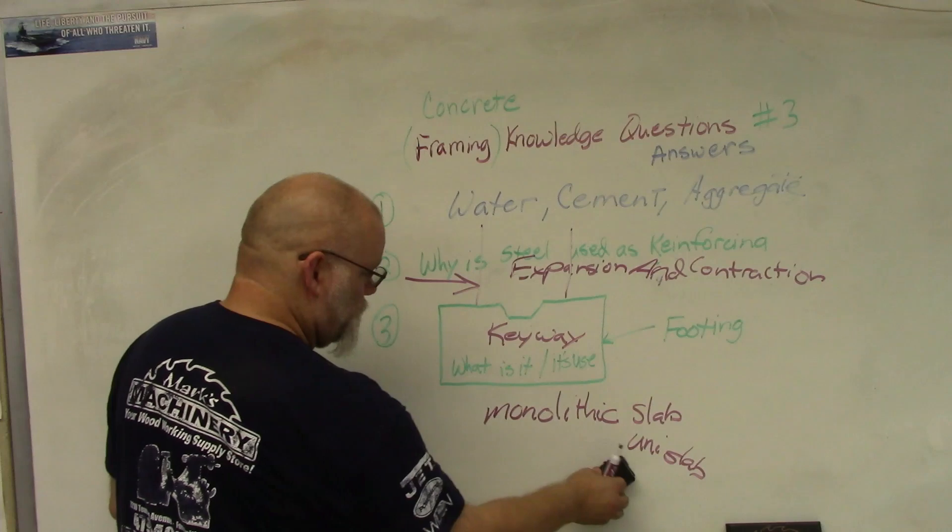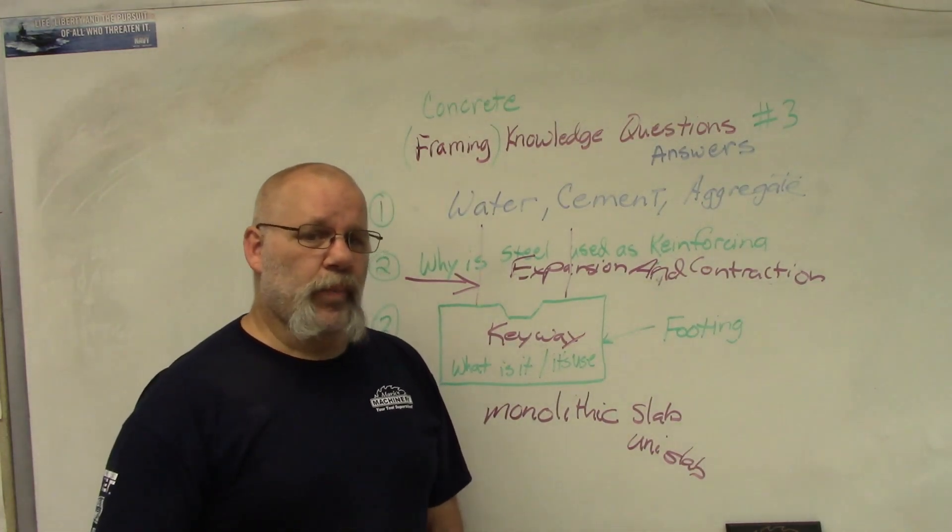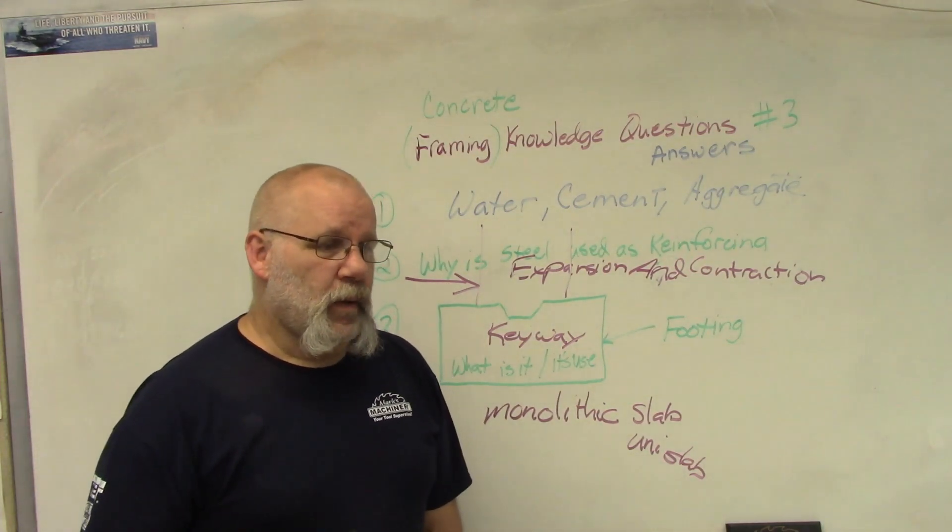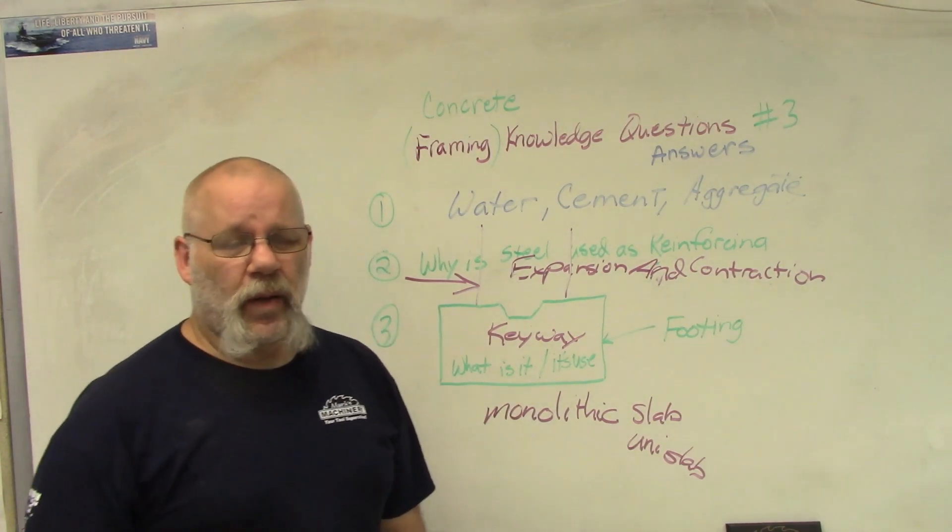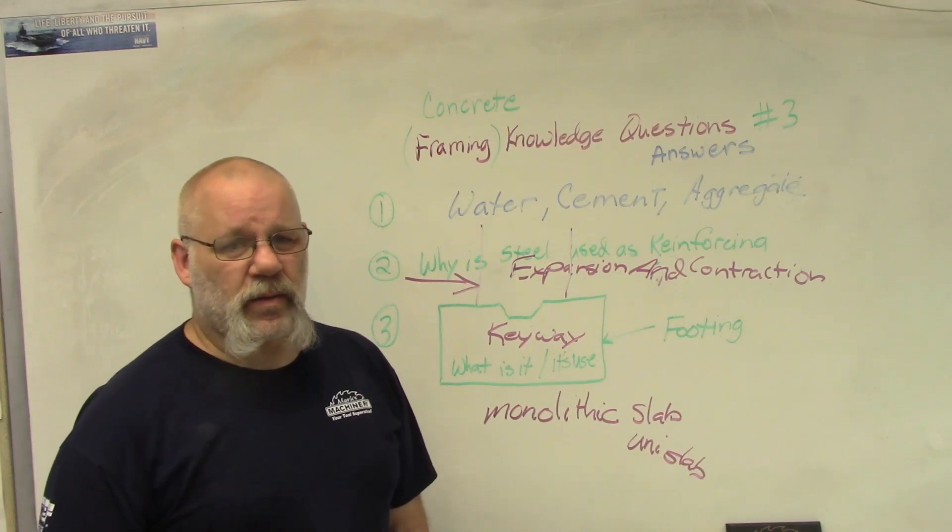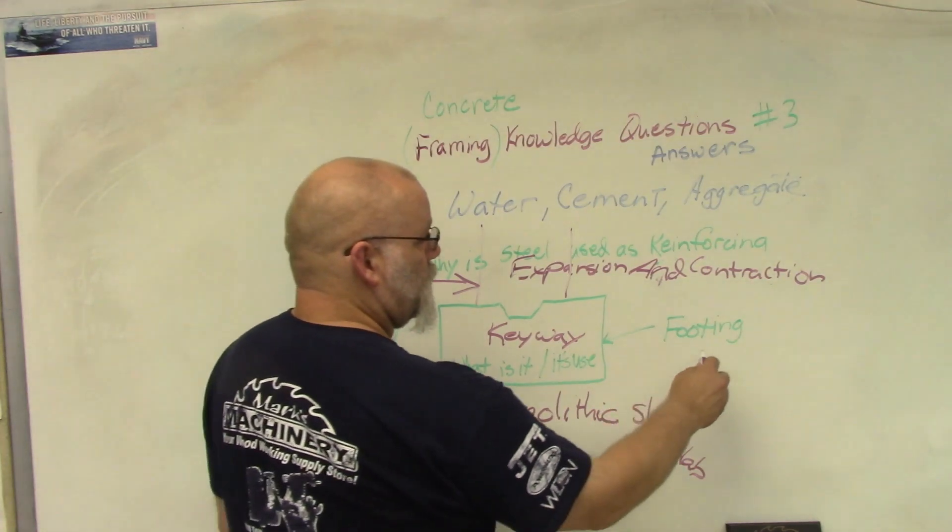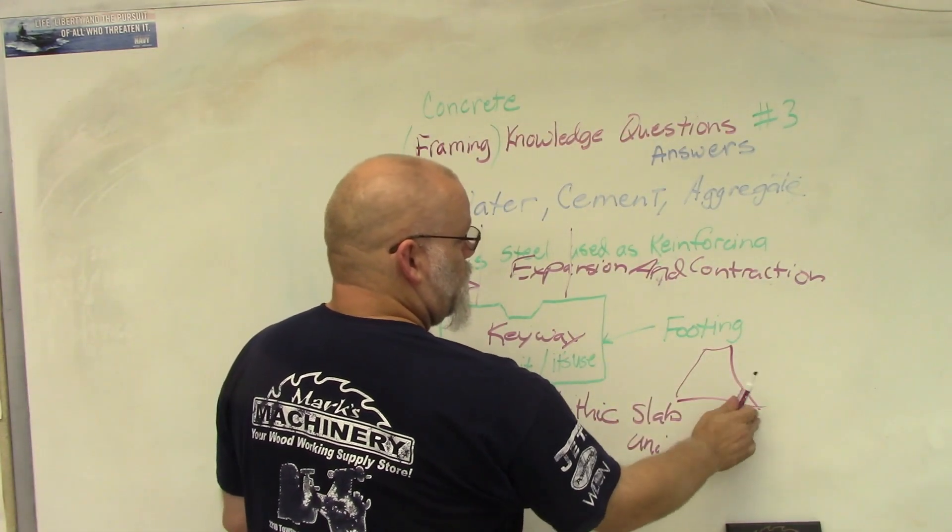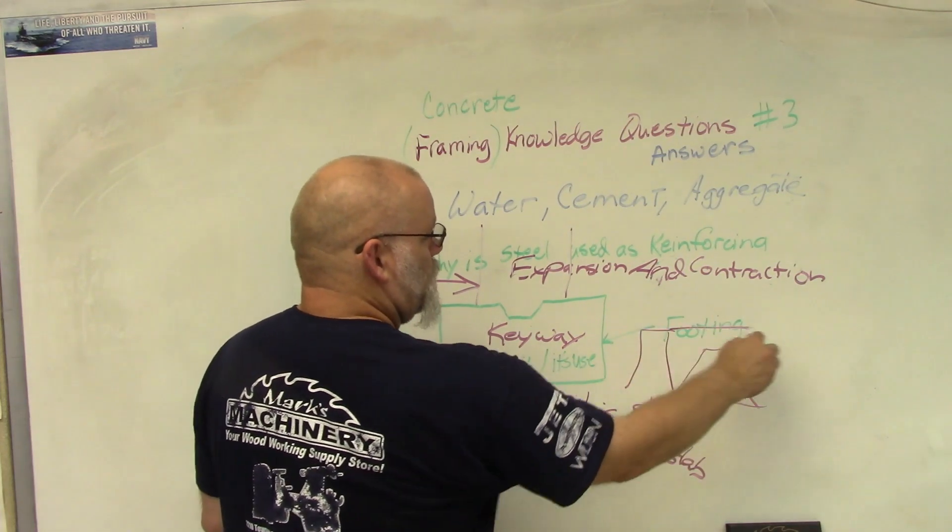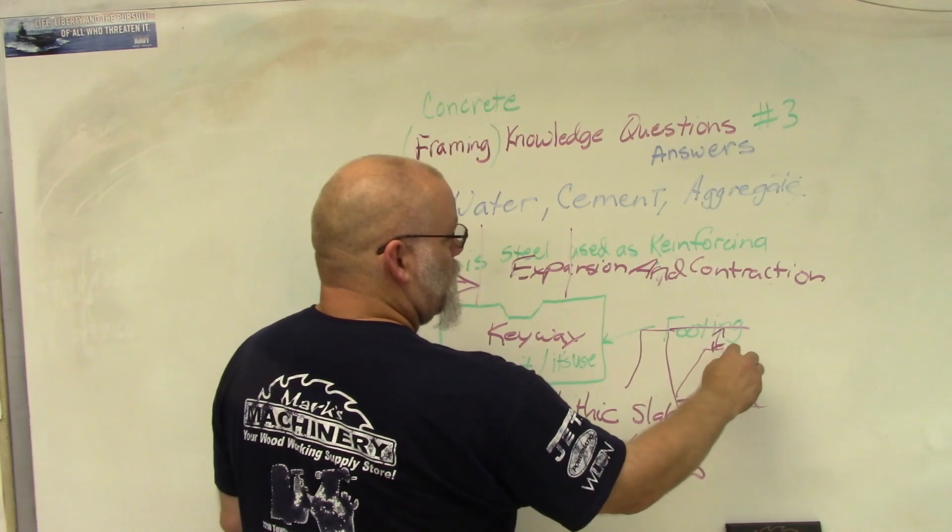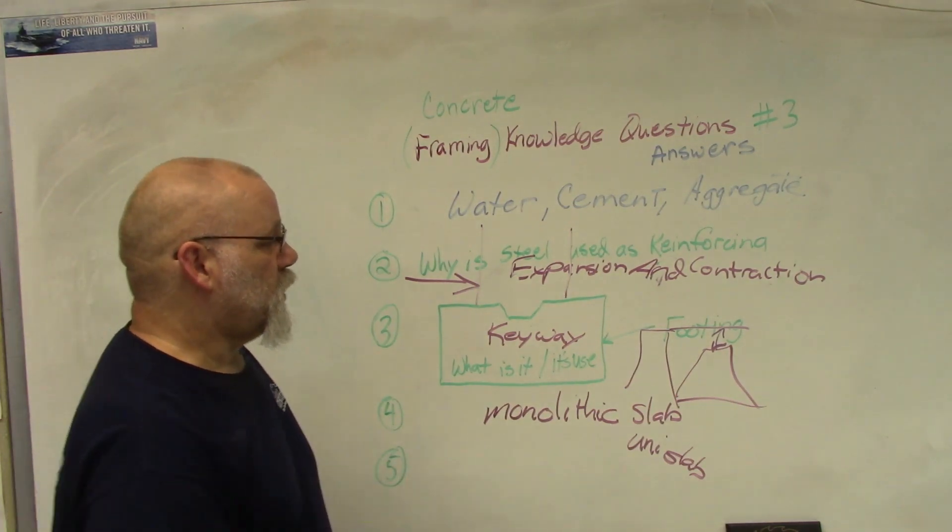Number five: what is slump? Slump has to do with the flowability of your concrete. When you're building a house and you're pouring footings and foundations, you generally want around maybe a five or a six on the slump. What that means is they'll take the concrete and they'll put it in a cone and turn it upside down, and then they'll see how much it shrinks from the cone that it came out of.